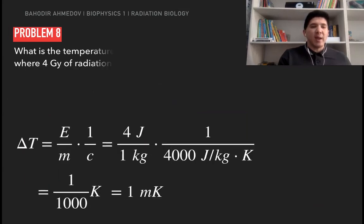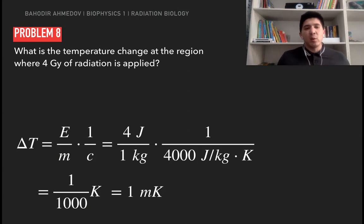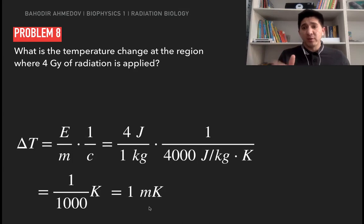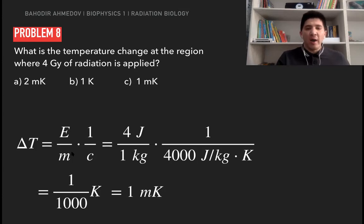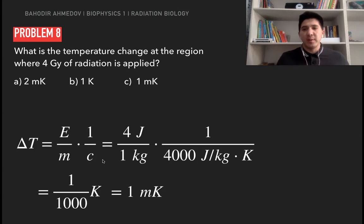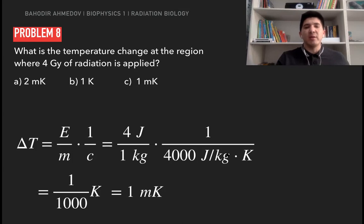Problem number eight: what is the temperature change in a region where 4 gray of radiation is applied? Using the formula delta T equals energy per kilogram divided by the specific heat parameter C. For water, C equals 4,000 J/(kg·K). Four gray means 4 joules per kilogram, so delta T equals 4 divided by 4,000, which equals 1 millikelvin. Earlier we saw that 8 gray causes a 2 millikelvin change, so 4 gray gives 1 millikelvin.